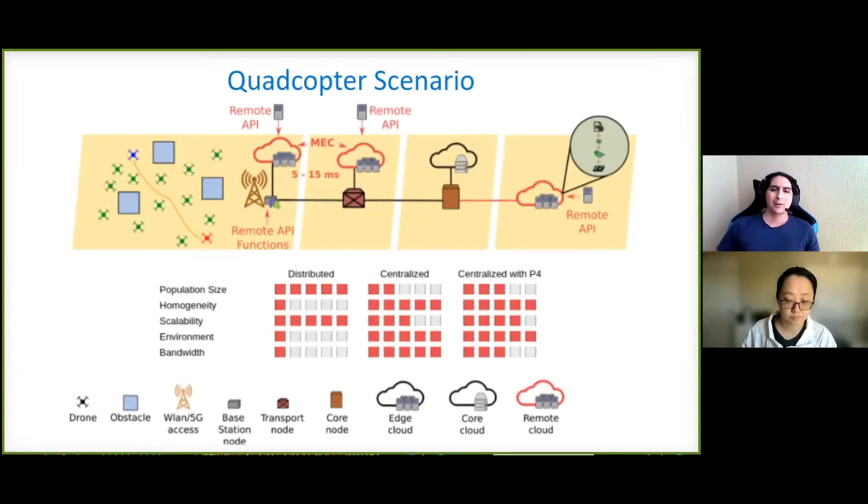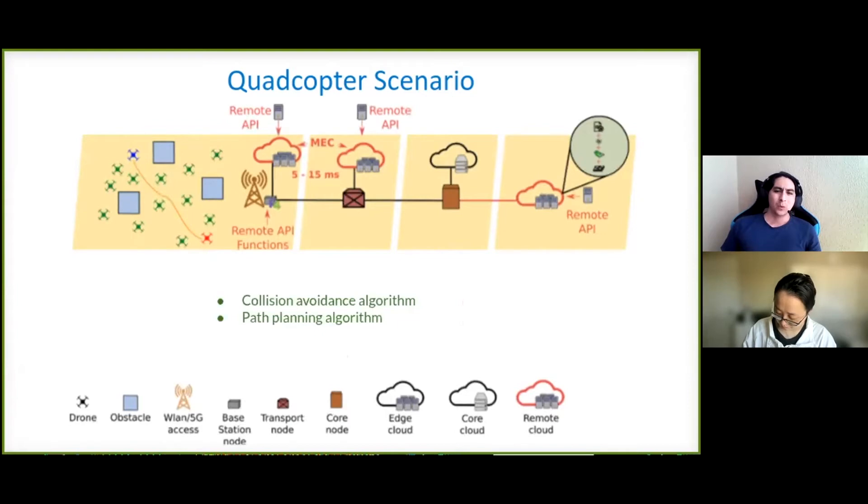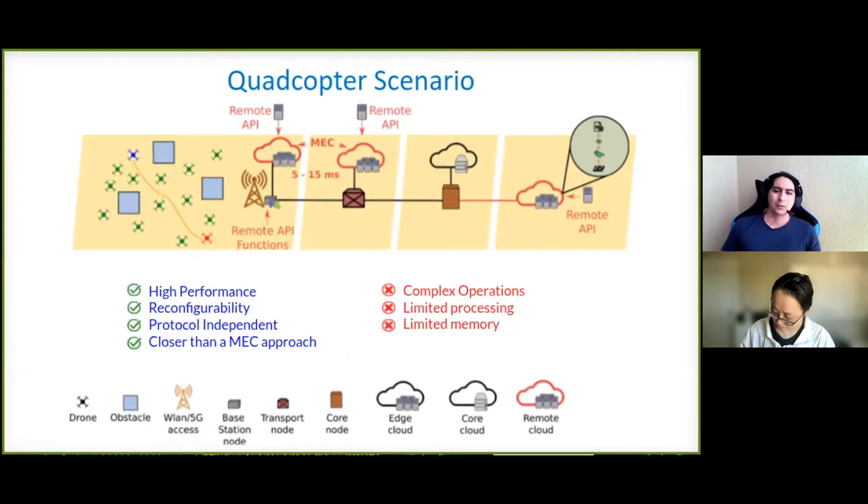But what kind of applications we can add to a P4 device? Well, we can add, for instance, a collision avoidance algorithm or a path planning algorithm. Of course, that when working with P4, we need to consider its benefits, but some of the possible limitations, as the use of complex operations, for instance.